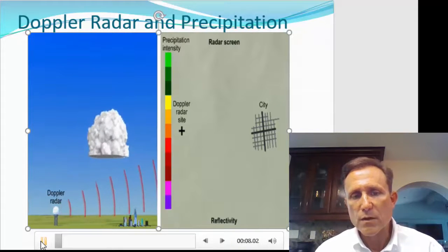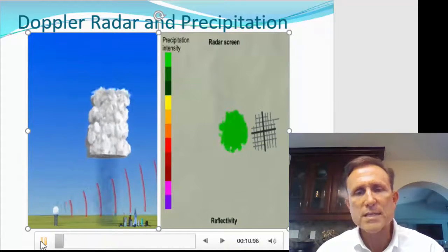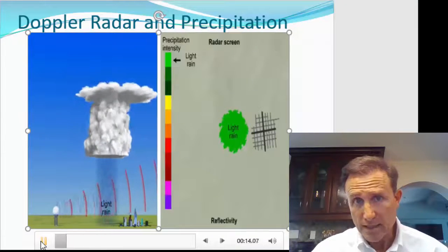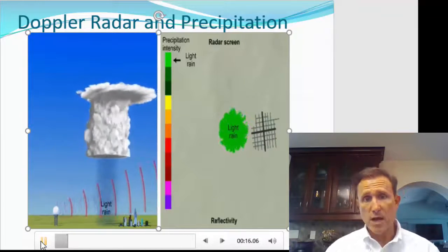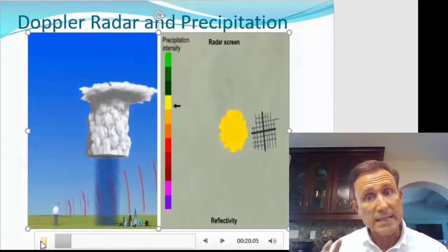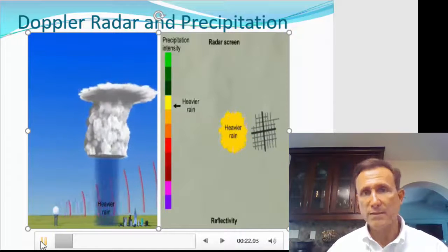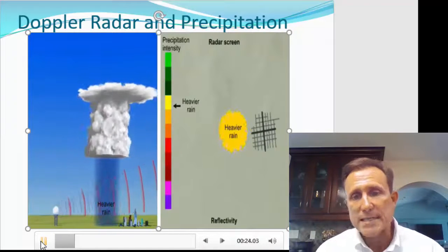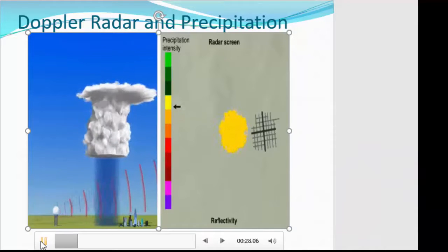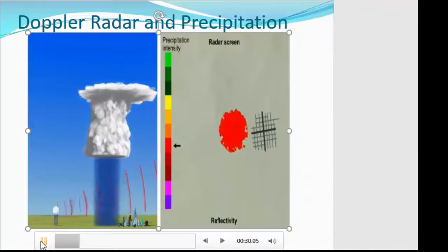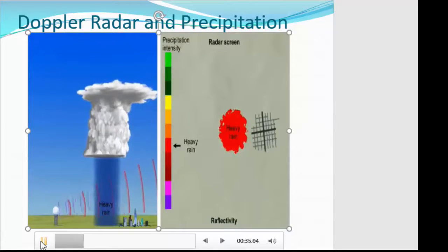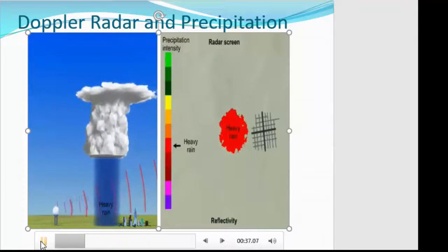So there we have a cloud form. The Doppler radar doesn't see the cloud. What it sees is the precipitation, first that light rain. Literally the electromagnetic pulse from the Doppler radar site bounces back or is reflected back to the radar site. It listens and based on how much is reflected back, that's how intense the rain is. It paints the image as heavier and heavier rain. We think of the light greens as light rain and the yellows and the oranges as heavier rain. And then once we get up to the red, that is the very heavy rain that we see now on the Doppler radar site.